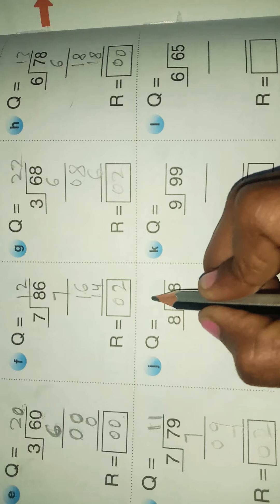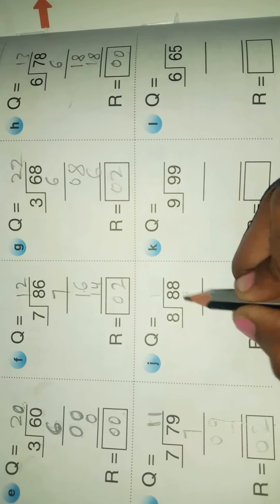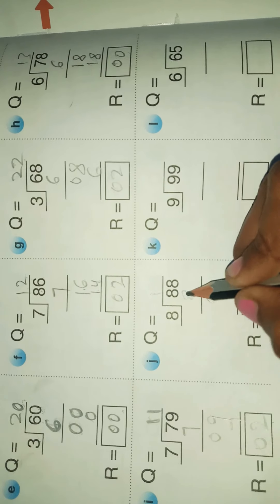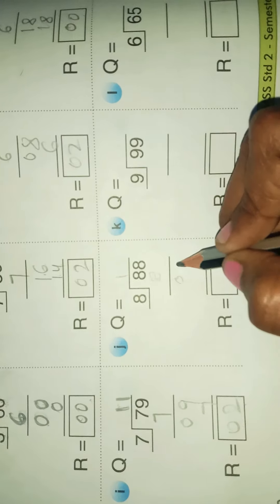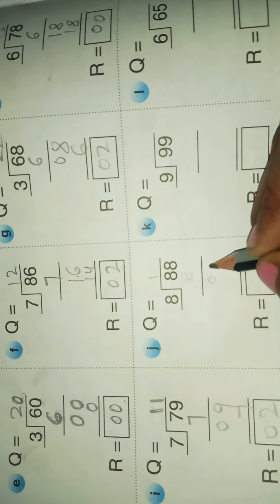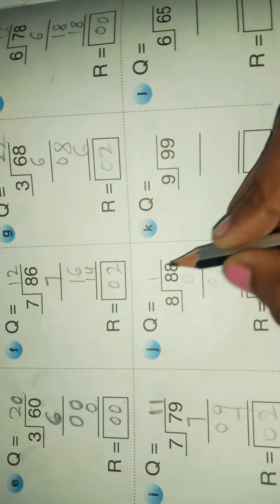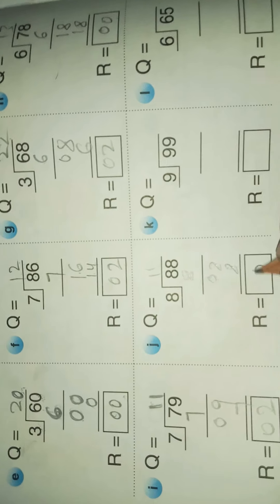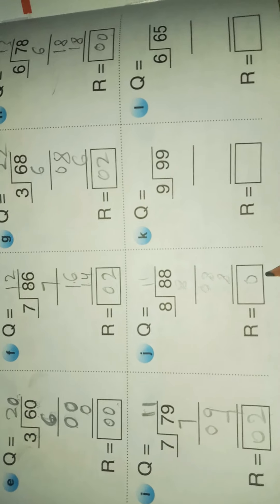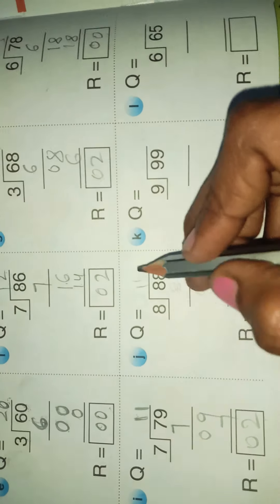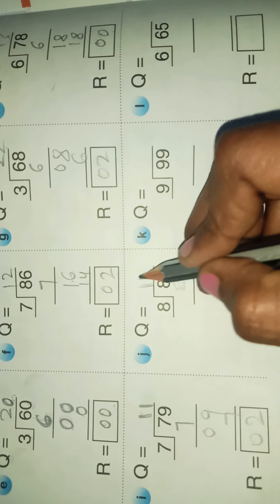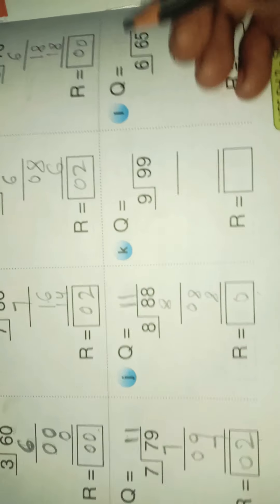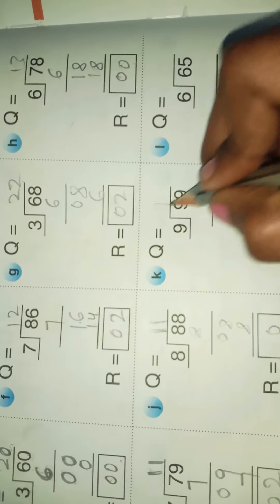Next: 8 ones are 8, 8 minus 8 is 0. Bring down 8 below. 8 ones are 8, it becomes zero. The remainder is 0 and the quotient is 11.